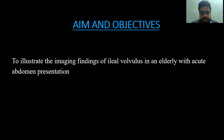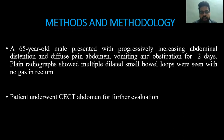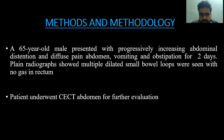Our aim and objective is to illustrate the imaging findings of ileal volvulus in a patient presenting with acute abdomen. A 65-year-old male presented with progressively increasing abdominal distension, diffuse pain abdomen, vomiting, and obstipation for two days. A plain radiograph showed multiple dilated small bowel loops with no gas in the rectum or distal bowel. The patient underwent CECT abdomen for further evaluation.